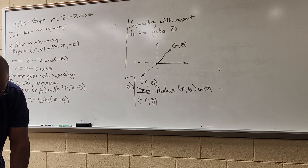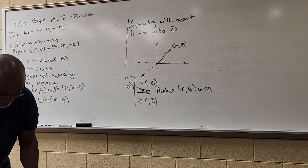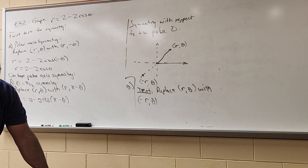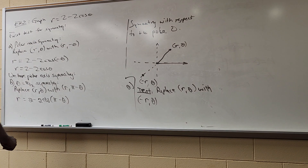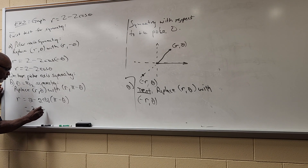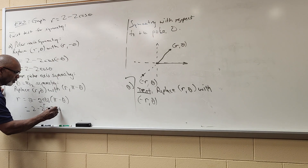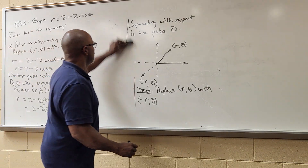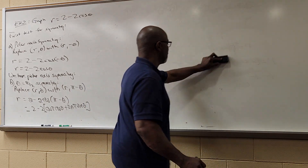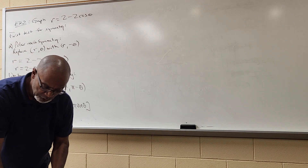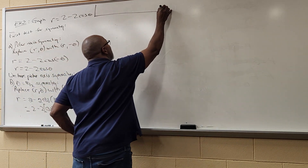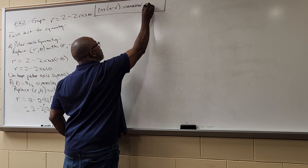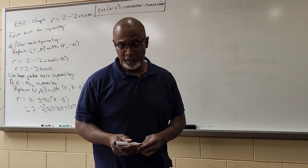To evaluate that, I need the difference formula for cosine from Chapter 5: cos(u - v) = cos u cos v - sin u sin v. Applying that identity: r = 2 - 2[cos π cos θ + sin π sin θ]. That's just applying the cosine difference formula, which is on the identity sheet.